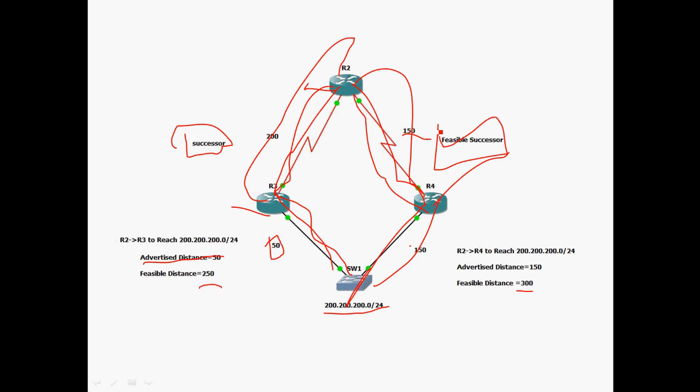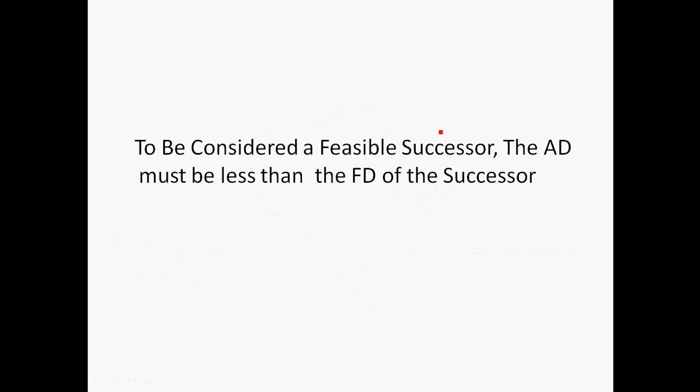The feasible successor is stored in the topology table. There is one important condition to be considered as a feasible successor: the advertised distance of the feasible successor must be less than the feasible distance of the successor. The successor has a feasible distance, and the feasible successor also has an advertised distance that must be the minimum.